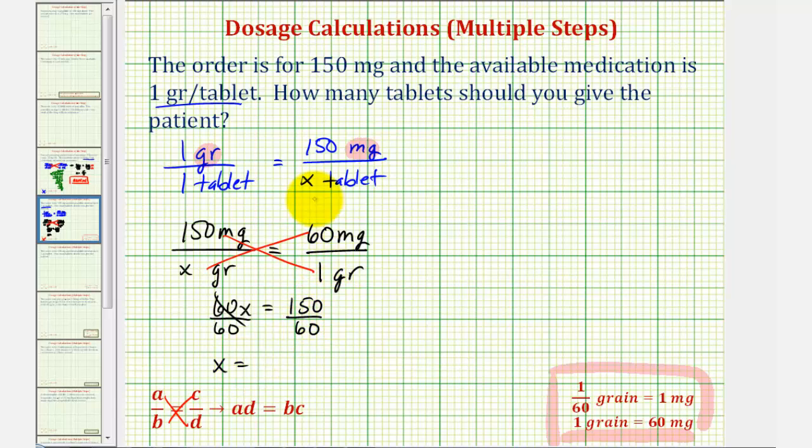These two share a common factor of 30, which would simplify to five halves, or two and a half, or 2.5. So X is equal to 2.5, which means 150 milligrams is equivalent to 2.5 grains.